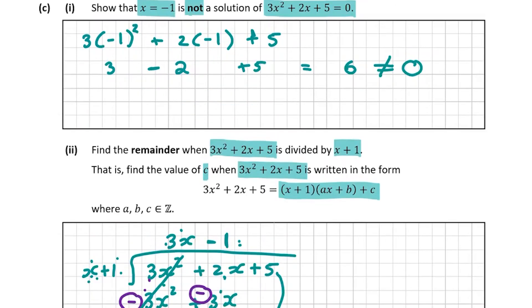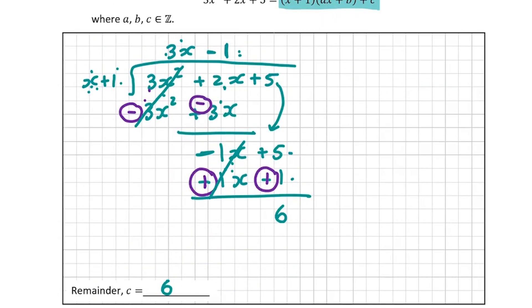For C part one and two: proving the result is not equal to zero and getting the remainder value of 6 earns you 15 marks between these two questions. That's all for this question — I hope you found this solution video helpful and that it cleared up any problems you had. I'll see you in the next video.